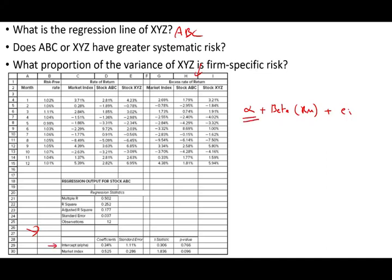What's the intercept here? It's positive, 0.34%. So the coefficient is the alpha, 0.34%, which is 0.003. Plus the market index, the beta is 0.525 times the excess return or the risk premium on the market for stock ABC.